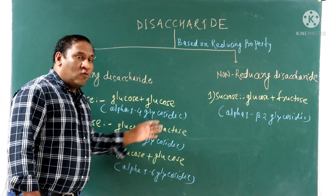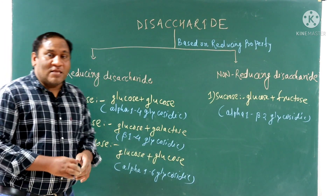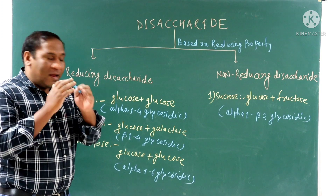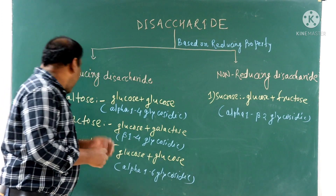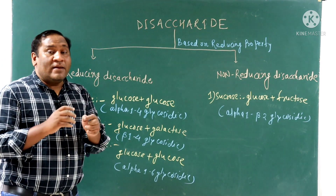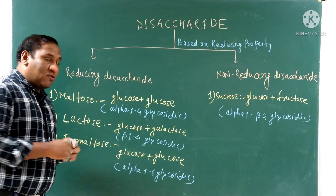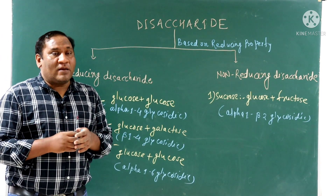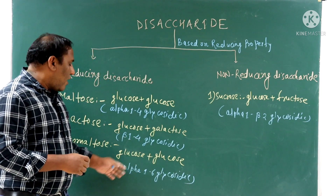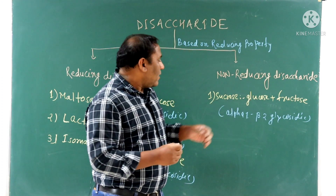Lactose contains glucose plus galactose joined by a beta-1,4 glycosidic bond. Lactose is hydrolyzed by the intestinal enzyme lactase. Deficiency of lactase leads to lactose intolerance. Lactose reacts with phenylhydrazine to form powder-puff or tennis-ball shaped crystals. Isomaltose is an intermediate metabolic product of starch. It contains glucose plus glucose joined by an alpha-1,6 glycosidic bond.